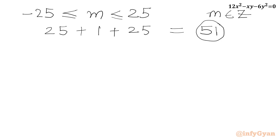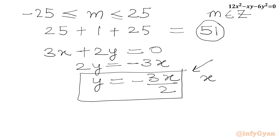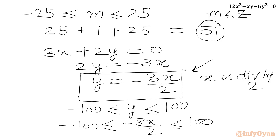Now we solve equation 2: 3x plus 2y equals 0. So 2y equals minus 3x, and dividing both sides by 2 gives y equals minus 3x over 2. In this case x must be divisible by 2. We apply the constraint: minus 100 ≤ minus 3x/2 ≤ 100, and multiply by 2 to get minus 200 ≤ minus 3x ≤ 200.